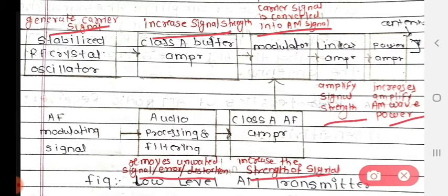See the first block: it is the stabilized RF crystal oscillator. Its function is that it generates the carrier signal. Then the next block is the class A buffer amplifier — its function is that it will increase the signal strength.